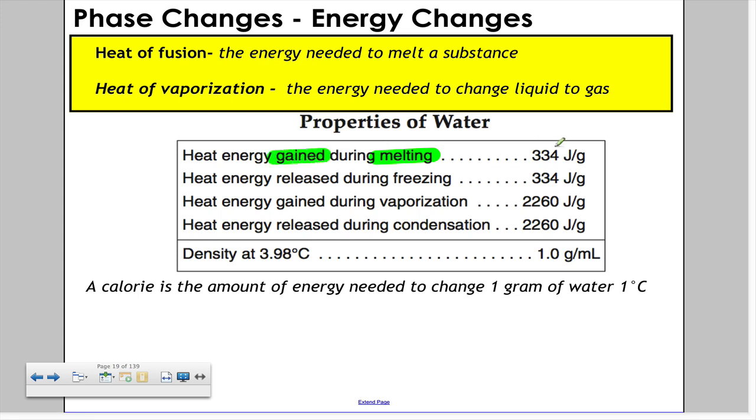The details are: when water is melting, it gains 334 joules for every gram. When it freezes, which is the opposite, it releases that same amount. When water turns into vapor, it gains 2260 joules per gram. When that water condenses back into liquid from gas, that energy is then released.